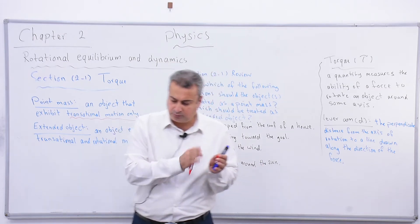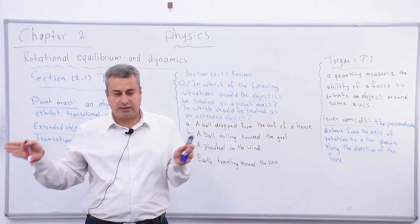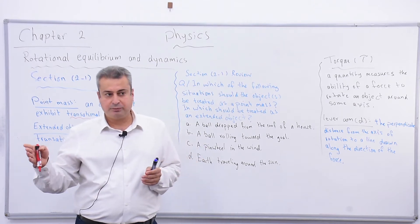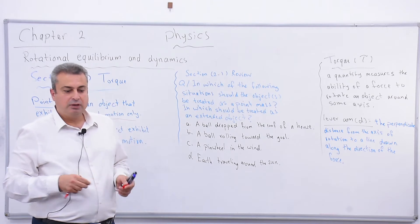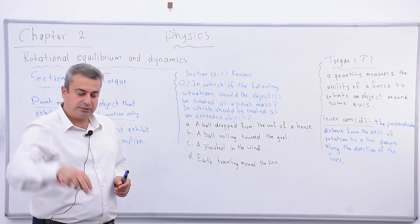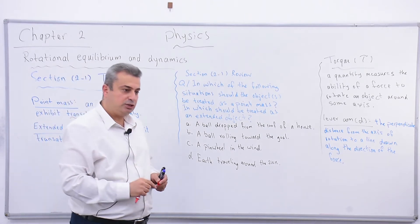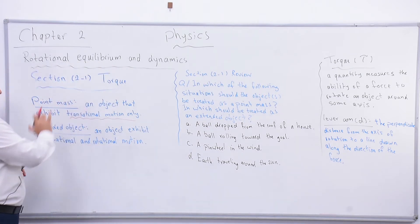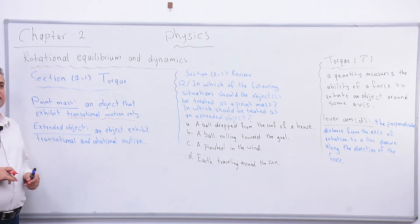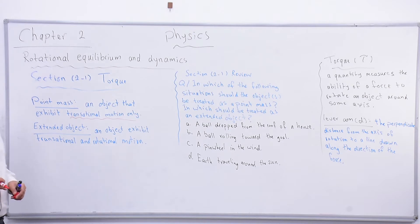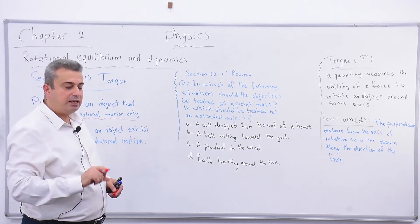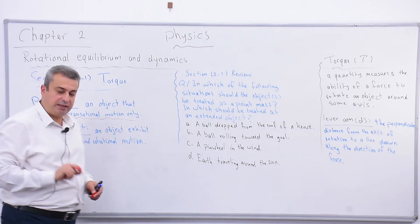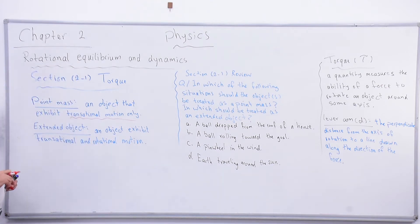For example, the movement of a car - the whole body of the car - from one point to another. Or a cat climbing a tree, or something being dropped. In those cases, it is only translational motion. So when asked whether to consider an object a point mass or extended object, I check the type of motion, and that tells me what type of object I have.